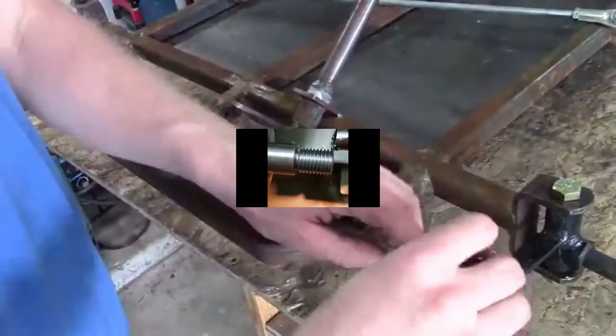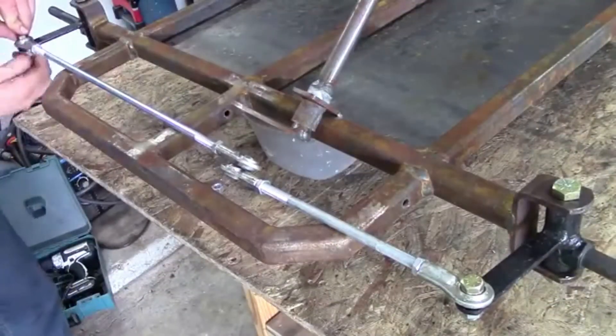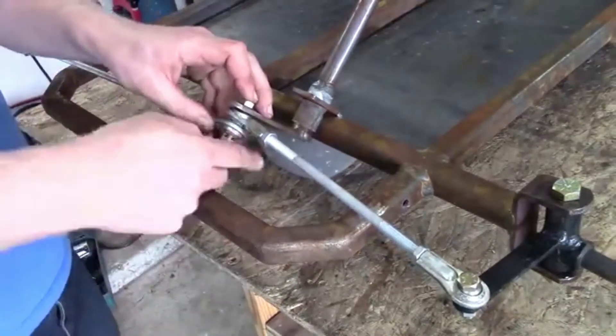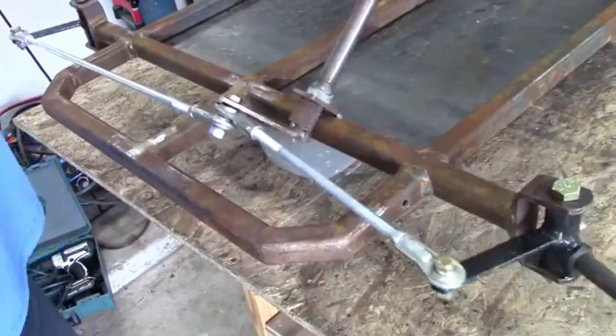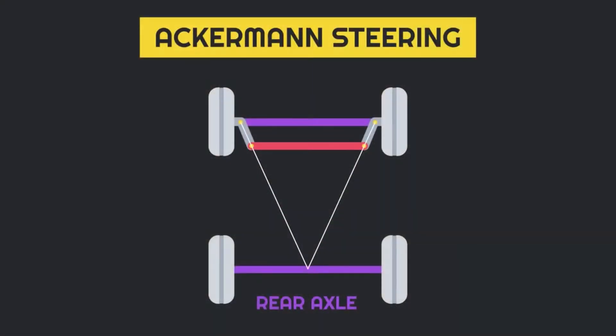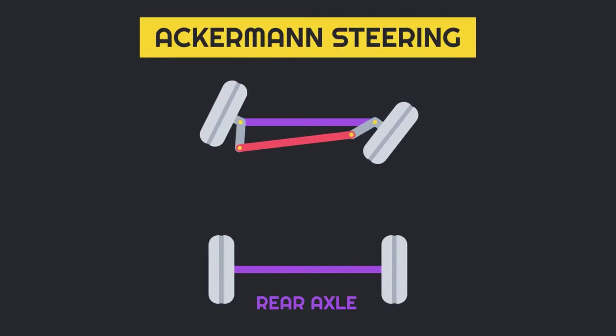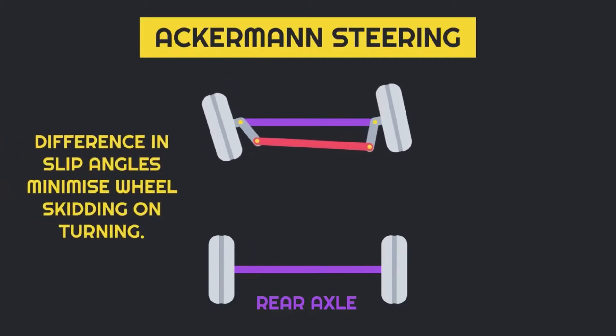Afterwards, knuckle joint transfers forces to the tie rods. Knuckle and tie rods are designed according to Ackerman geometry. The beauty of Ackerman geometry is that it helps to turn front wheels at different angles which avoids slipping of the vehicle during cornering.